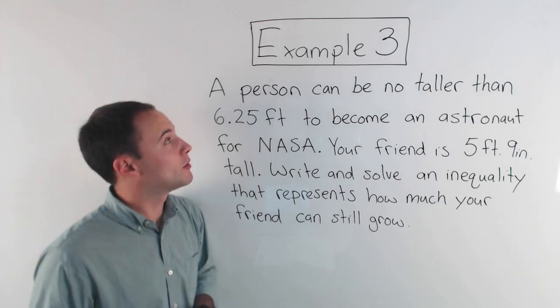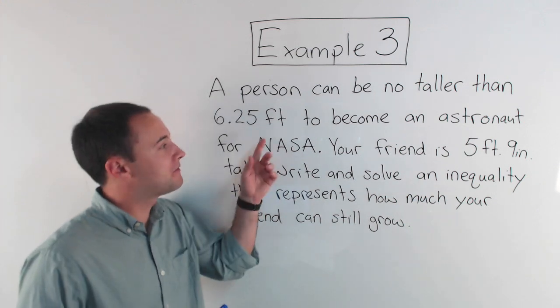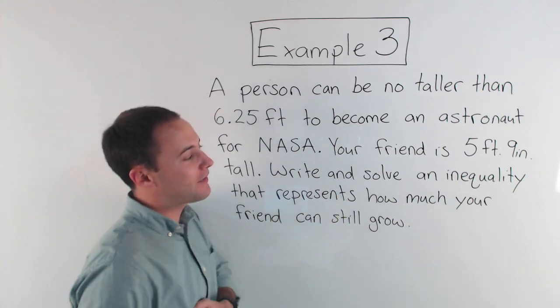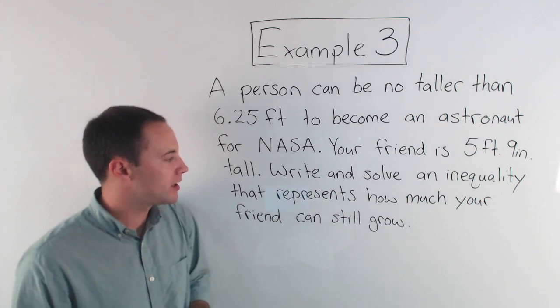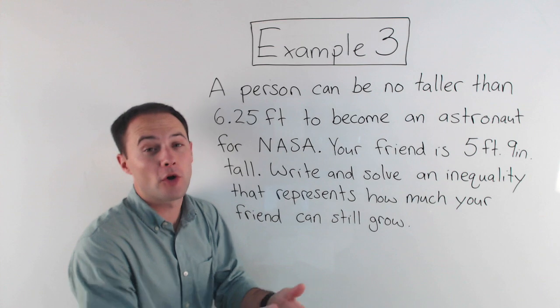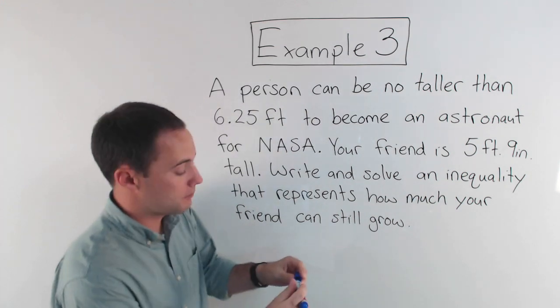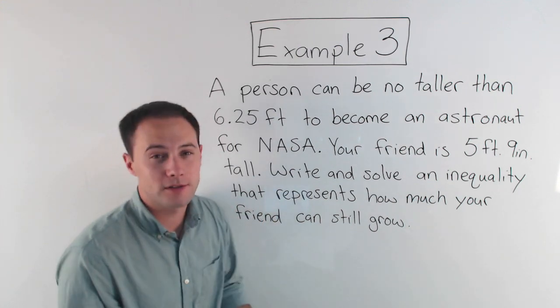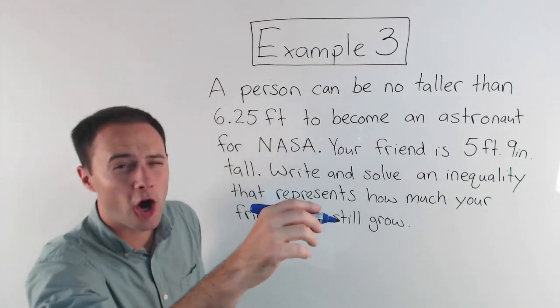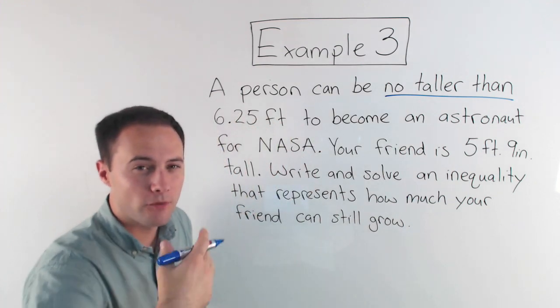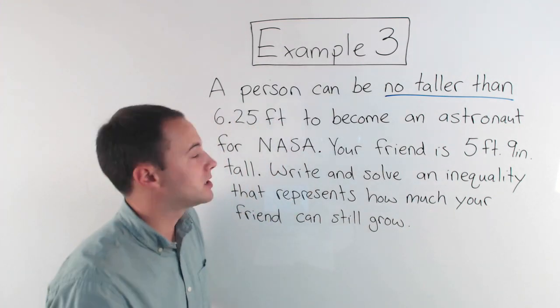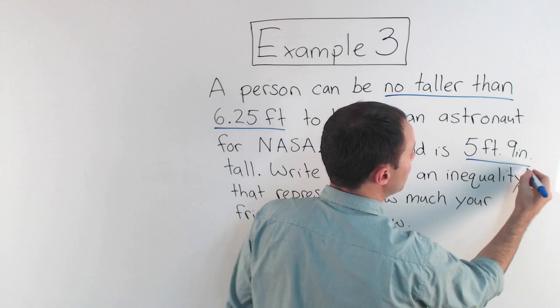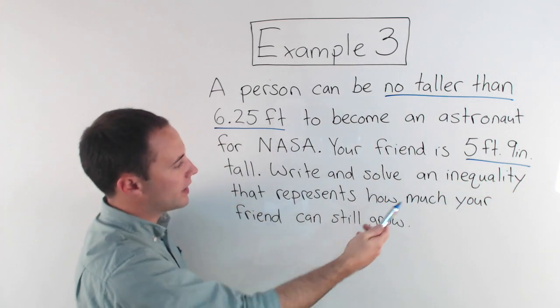Here's our last example. A person can be no taller than 6.25 feet to become an astronaut for NASA. I guess you got to be able to fit inside the space shuttle. Your friend is 5 foot 9 inches tall. Write and solve an inequality that represents how much your friend can still grow, can still grow and become an astronaut. So looking at this word problem, if you want to pause it and see if you can figure this out yourself, go for it. First, we're going to look for some key words. Hopefully you notice a person can be no taller than. Well, that's very important. That's kind of why we're going to be writing an inequality and not an equation. 6.25 feet is important to become an astronaut for NASA. Your friend is 5 foot 9 inches tall. That's important. And then obviously we got to write and solve our inequality.